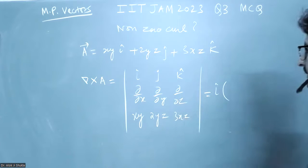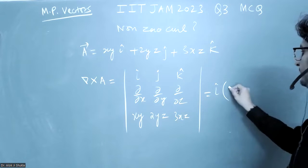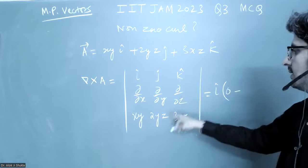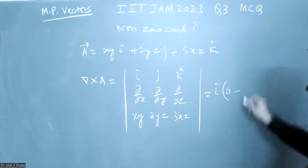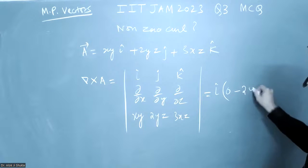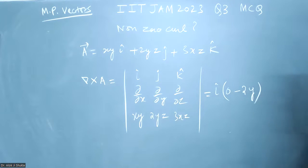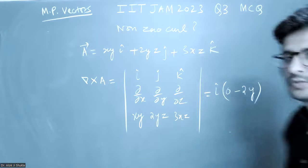i cap, this is zero, and minus this, the derivative with respect to z will result in 2y. Now you don't need to solve it further because this term is nonzero, so the curl will be nonzero.